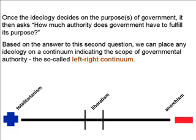On the far left of the continuum, we find totalitarian systems of political thought, including totalitarian communism and totalitarian fascism. Totalitarianism concedes unlimited authority to government. Government, according to totalitarian ideologies, may assume whatever authority it deems necessary to fulfill its purpose or purposes.